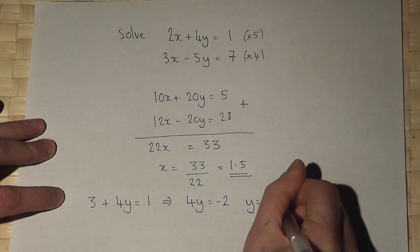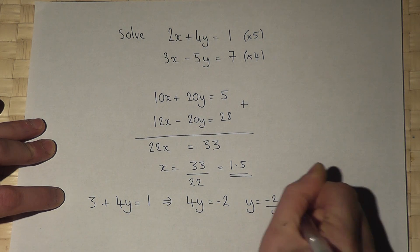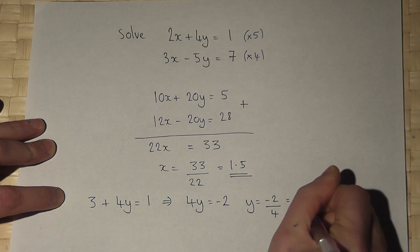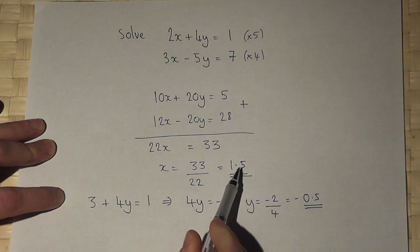So y equals minus 2 over 4, which is minus 1 half or minus 0.5. So x is 1.5, y is minus 0.5.